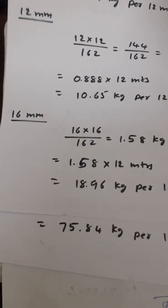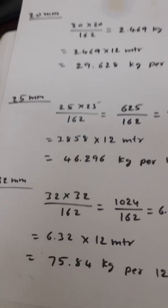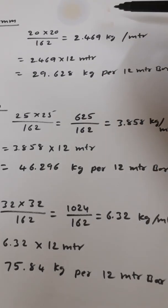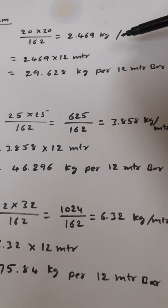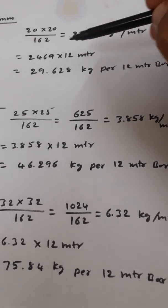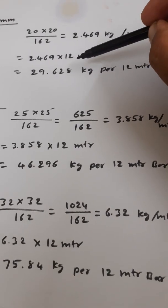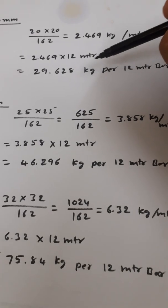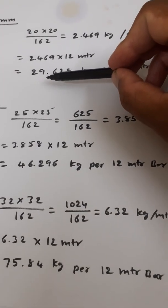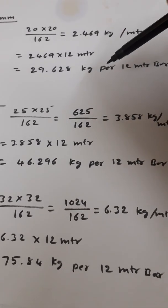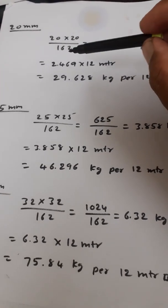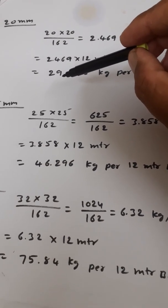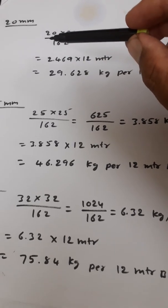For 20mm, it is 20 × 20 divided by 162, giving about 2.469 kg per meter. Multiplying by the standard 12-meter length gives approximately 29.628 kg. So a full-length 20mm bar weighs about 29.628 kg.